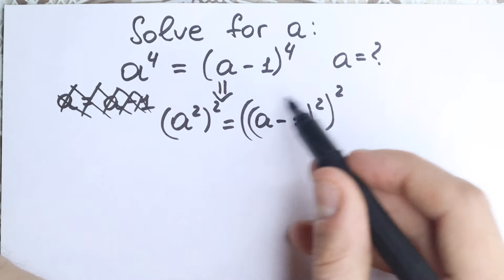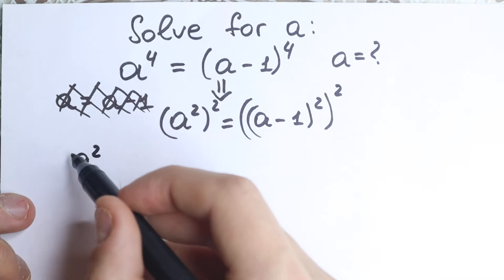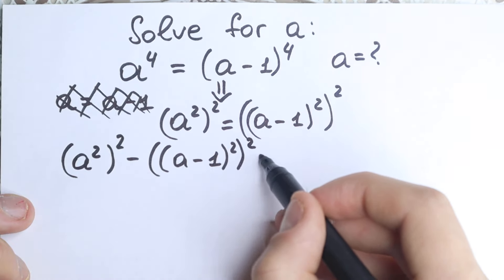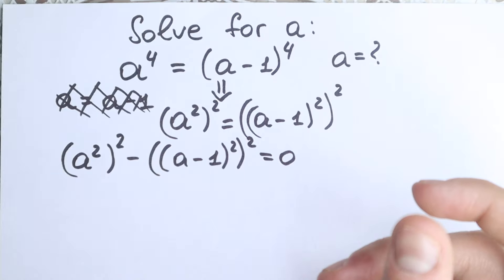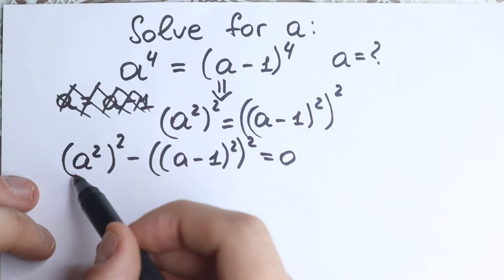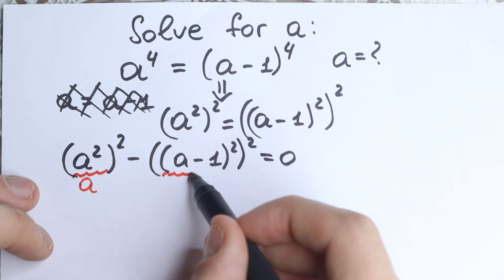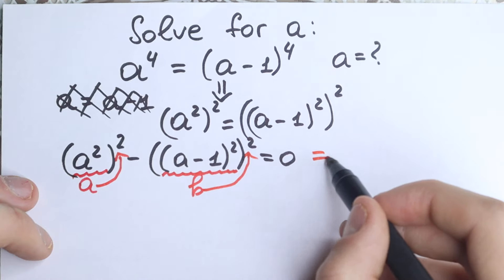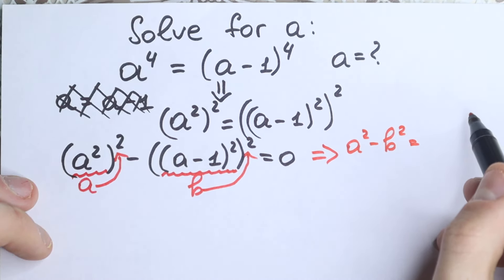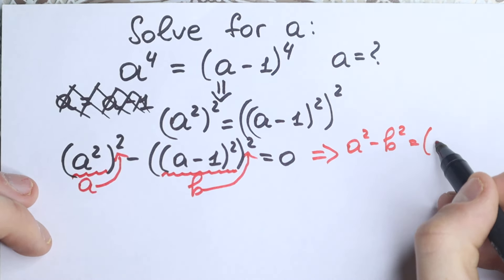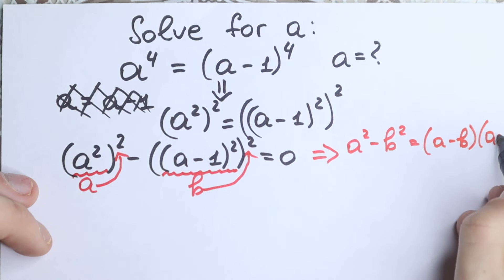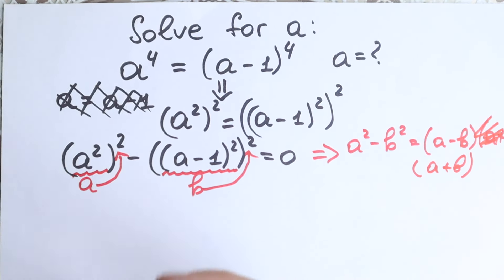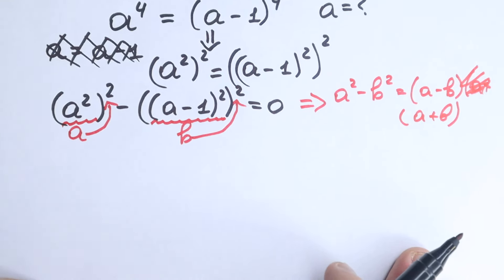Right now let's bring this expression from the right to the left. So we have a-squared squared minus a-minus-one squared squared equal to zero. I'll take my red pen because I want to write this very important moment. If we call a-squared some expression A and a-minus-one squared expression B, we have A-squared minus B-squared, which is the well-known difference of squares identity from school: a minus b times a plus b.